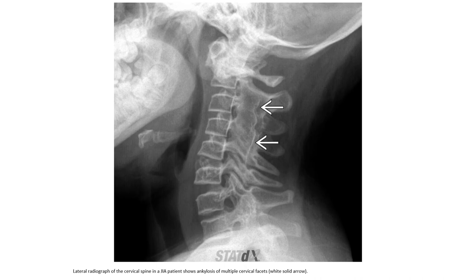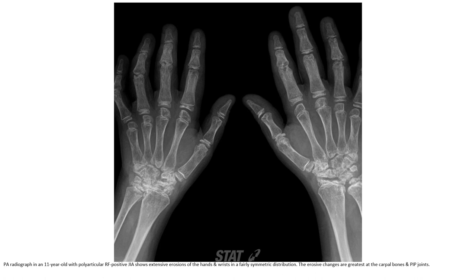Lateral radiograph of the cervical spine in a JIA patient, showing ankylosis of multiple cervical apophyseal joints. PA radiograph in an 11-year-old with polyarticular rheumatoid factor-positive JIA, showing extensive erosion of the hand and wrist in a fairly symmetric distribution. The erosive changes are greatest at the MCP and PIP joints.